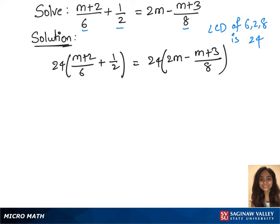In the next step, 6 cancels 24 with 4, so we have 4 times m plus 2. Plus 2 cancels 24 with 12, so we have 12, equals 24 times 2 is 48, so 48m minus 8 cancels 24 with 3, so 3 times m plus 3. Use the distributive property again to remove the parenthesis.